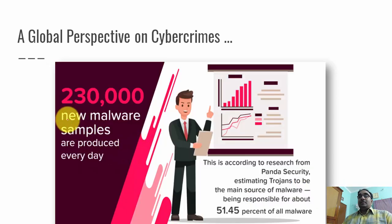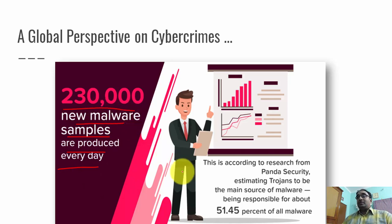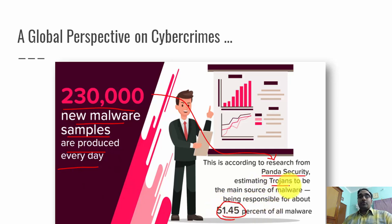The infographic says 230,000 new malware samples are produced every day — a lot of people are developing new malware and spreading it across the internet. This figure is according to research from a firm called Panda Security. About 51 percent of all malware is trojans, which are also a type of malware.